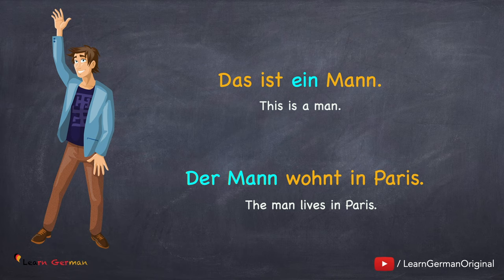That's why we use Unbestimmte Artikel. Here you have to remember: when the bestimmte article is der, then you use ein as the Unbestimmte Artikel. In English you have a or an as indefinite articles, whereas the definite article is the.